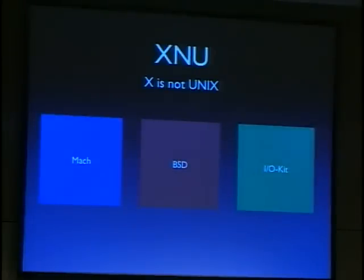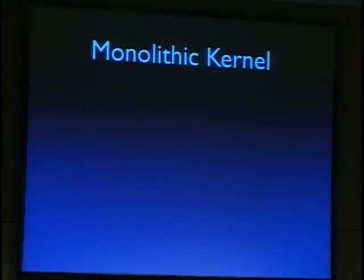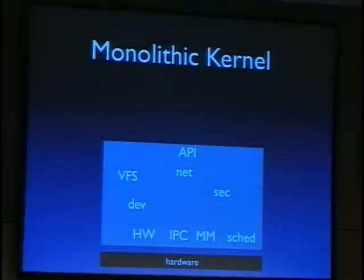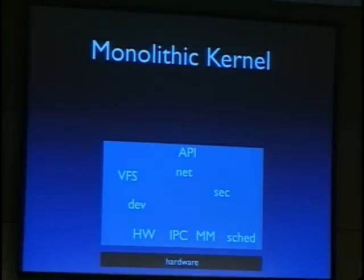Mach was originally a research project at Carnegie Mellon University (CMU), started in 1985. Mach is the microkernel project. In traditional monolithic kernels like Unix, BSD, and Linux, components like the file system framework, security components, user mode interface, network stack, and device drivers all run in kernel mode — along with the parts that really need to be there.